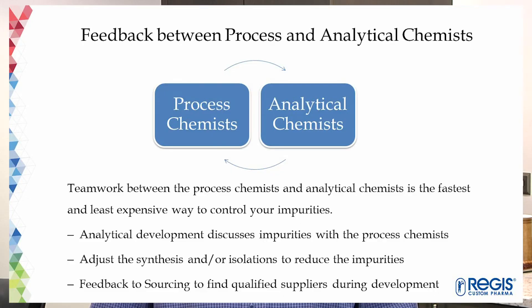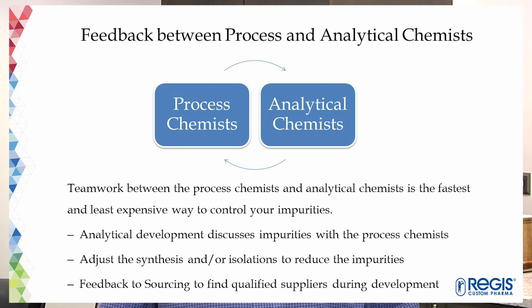Finally, within CDMO organizations, teams of analytical chemists and process chemists are typically working together at the same location. The teamwork between process chemists and analytical chemists is the fastest and least expensive way to control your impurities. Analytical development discusses impurities with the process chemists, including analytical results of an API batch, possible structures of impurities, and batch performance with the trend of impurity profile. With the information from analytical chemists, process chemists can adjust their synthetic routes or apply isolations to reduce the impurity level.